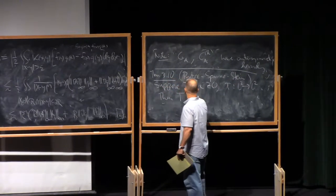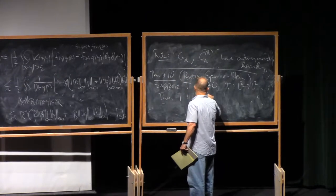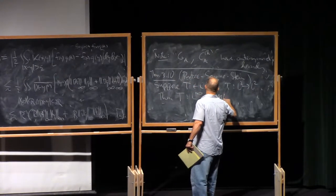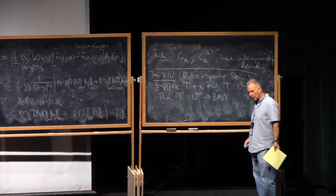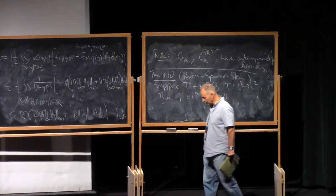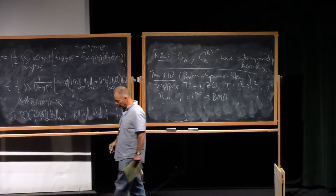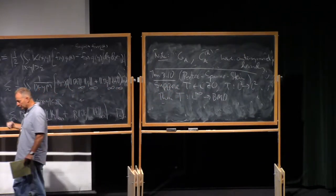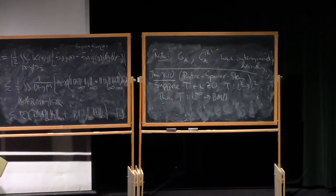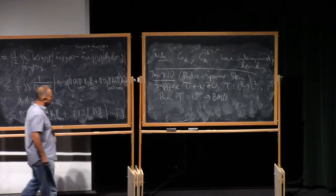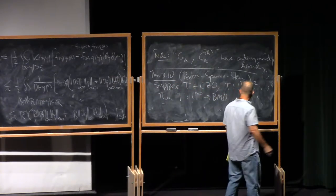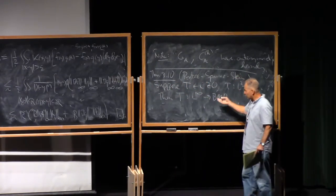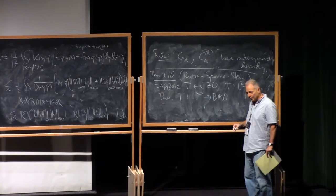Then T maps L infinity to BMO. Calderón-Zygmund operators are typically not bounded at the endpoints. They're bounded on, I mean, what you typically hope to find anyway, is that once you get L2 you get Lp-boundedness, but you don't get L infinity-boundedness, nor do you get L1-boundedness. You get weak type 1,1, and this is the naturally associated endpoint result in infinity.